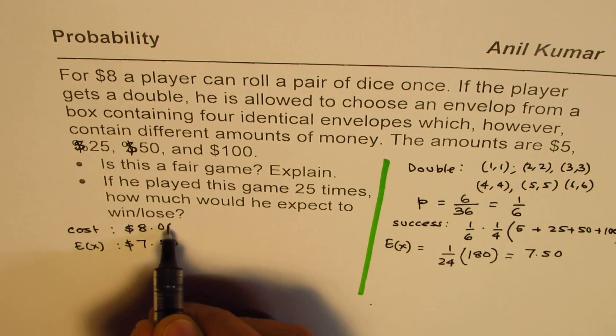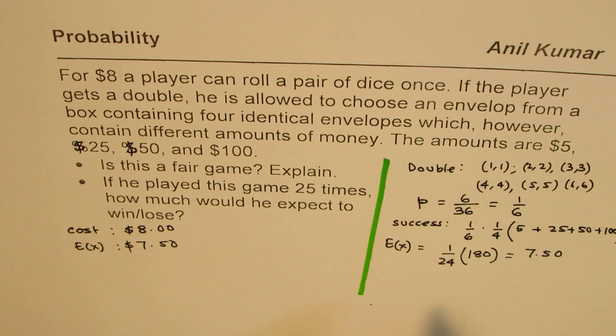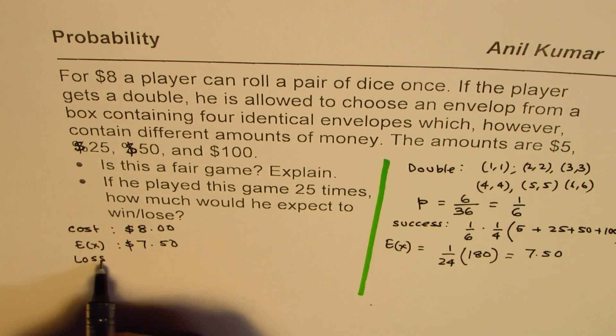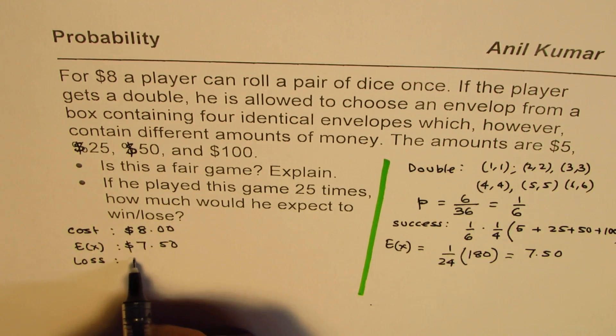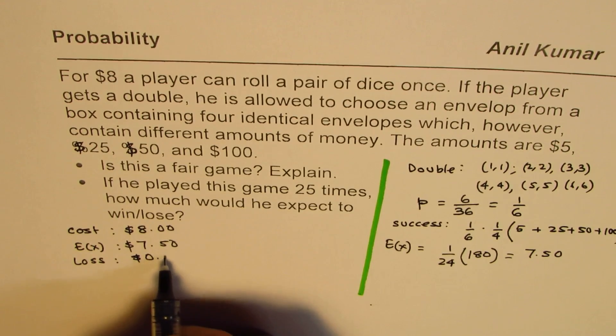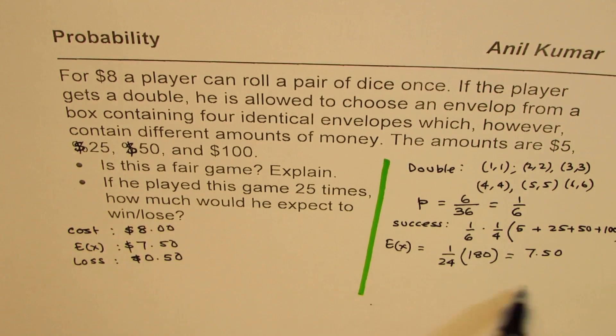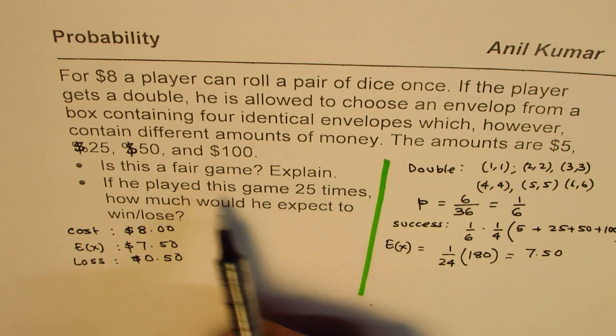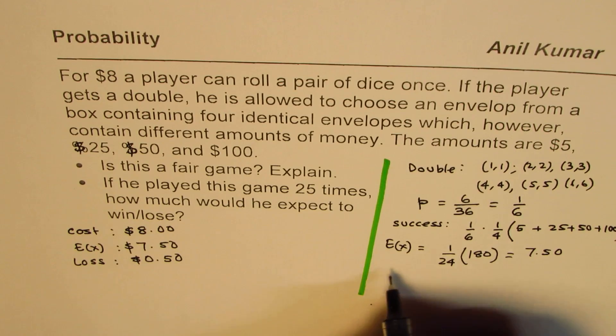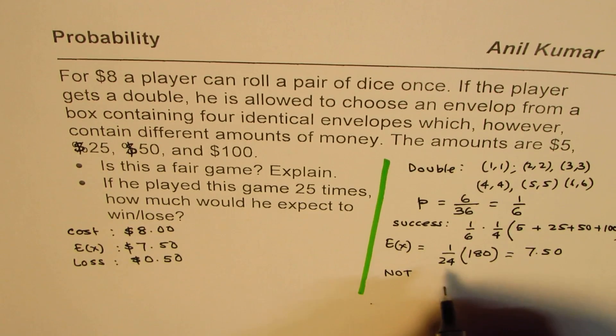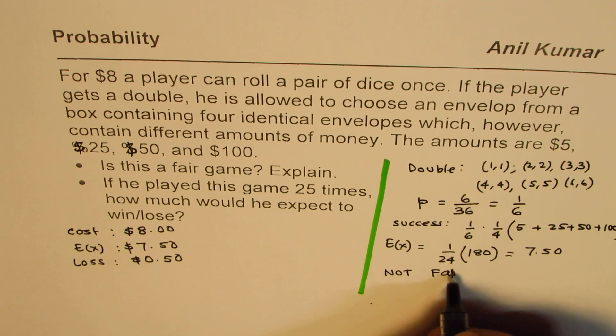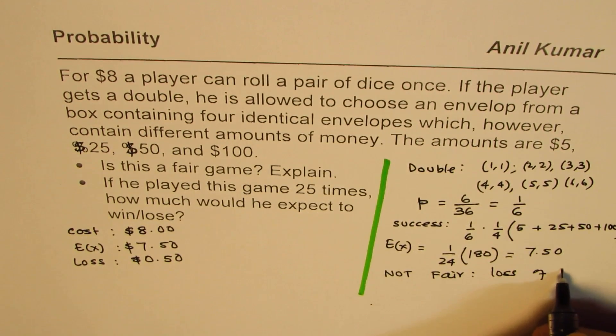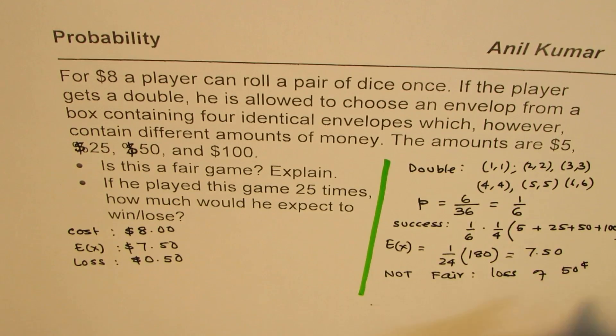So the expected value here in dollars is $7.50. You are spending $8.00. That means what? That means a loss of 50 cents. So that is a loss of 50 cents. So should you call this a fair game? So we'll say not fair, as it gives a loss of 50 cents. That's part A.